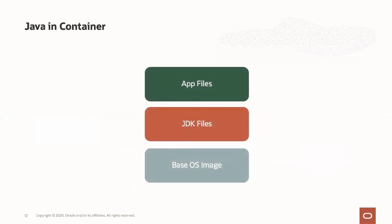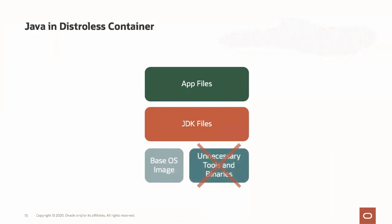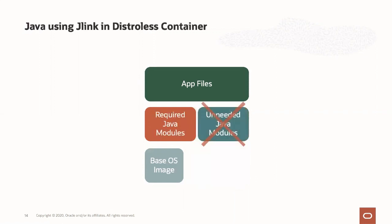When thinking about running Java in a container, you've got roughly three elements: your application code, the various JDK classes and jars on the classpath, and your base OS and its utilities. You probably don't need everything in the OS, so you can throw out things you don't need. You can also use JLink with modules to remove all the Java modules you don't need, shrinking down the JRE footprint — which is a nice improvement, but doesn't quite go all the way.